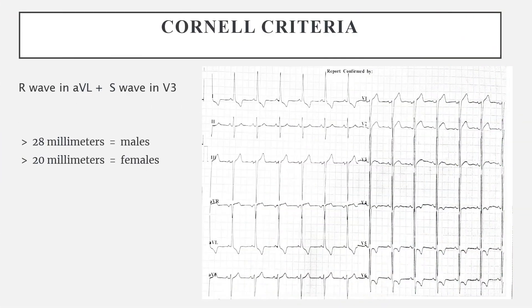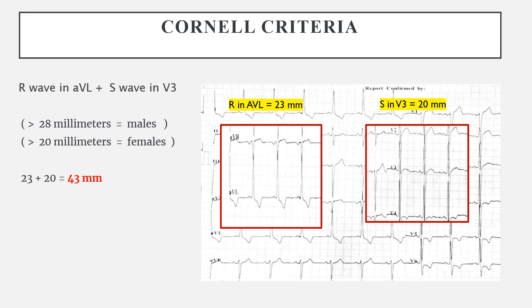Let's apply the Cornell criteria first. For that, we have to see the R wave in AVL and the S wave in V3. Combining the values for these, if it comes to more than 28 millimeters for males and 20 millimeters for females, it suggests left ventricular hypertrophy. In our ECG, the R wave in AVL was 23 mm and the S wave in V3 was 20 mm, combining to 43 mm — well above the threshold. This criteria was met.